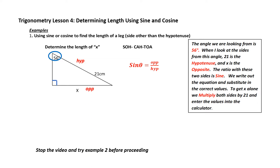x is the opposite because it's across from the angle that I'm working with. Now, which ratio has O and H in it? That would be sine. Unpacking that means that sine of theta is equal to opposite over hypotenuse. I now fill in the values that I've got. I know that theta, or the angle I'm looking from, is 56, so I fill in 56 for theta. My opposite is x, so I replace my numerator with x, and my hypotenuse is 21, so I replace my denominator with 21.